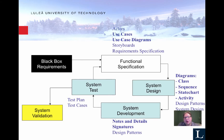These are part of the artifacts. In the functional specification we typically have storyboards, use cases, and use case diagrams — that is part of the requirement specification. In the system design we typically have class diagrams, sequence diagrams, state charts, activity diagrams, etc., and that is part of the technical description or system design.